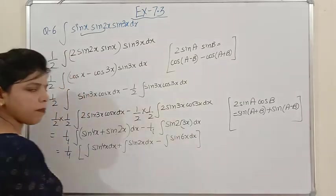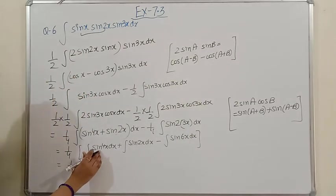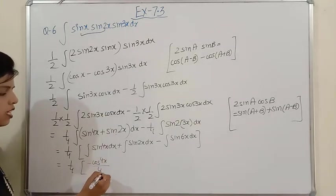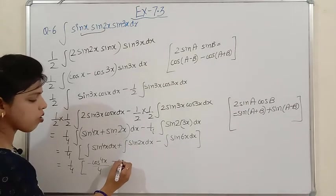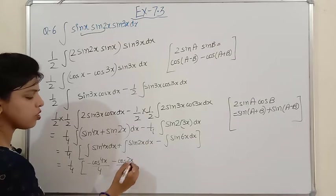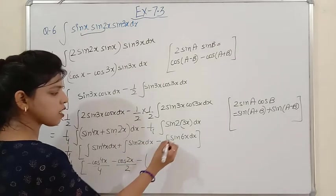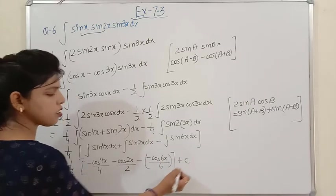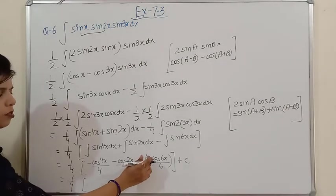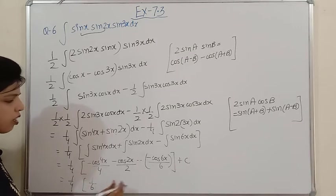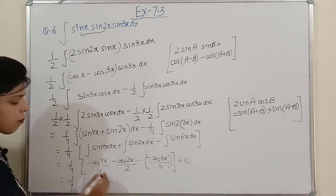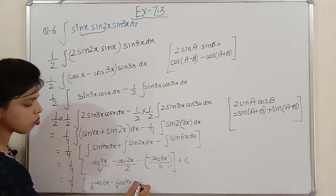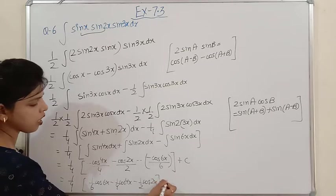Integrating each: ∫sin4x dx = −cos4x/4, ∫sin2x dx = −cos2x/2, ∫sin6x dx = −cos6x/6. With the negative signs and (1/4) factor: the final simplified answer is (1/6)cos6x − (1/4)cos4x − (1/2)cos2x + C... wait, adjusting signs correctly: (1/6)cos6x − (1/4)cos4x − (1/2)cos2x + C. Please note it down.